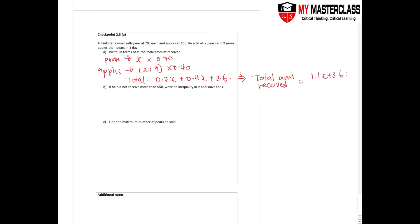Now part B. If he did not receive more than 58, write an inequality and solve for X. So he did not receive, did not means he received less than 58. So you have 1.1X plus 3.6 less than 58.